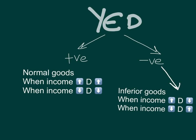Just like cross-price elasticity of demand, the sign of income elasticity of demand is important. If the income elasticity of demand gives you a positive value, this means the product is a normal good. A normal good means that when income increases, demand will increase, and when income decreases, demand will decrease. Income and demand for normal goods move in the same direction.